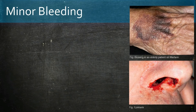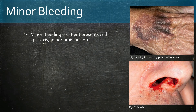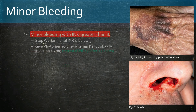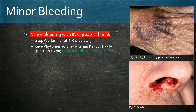For minor bleeding with an INR of 5 to 8, stop the warfarin until the INR is below 5, then give vitamin K by slow IV injection 1 to 3 milligrams once. If the INR is greater than 8, treatment is the same; however, the vitamin K injection can be repeated if the INR is still greater than 5 after 24 hours.